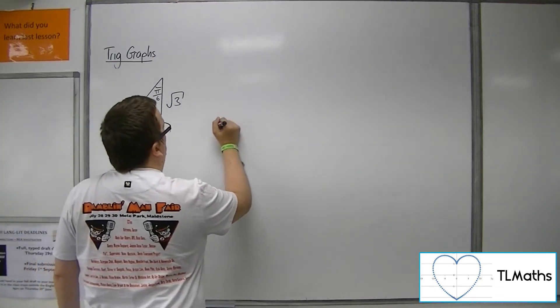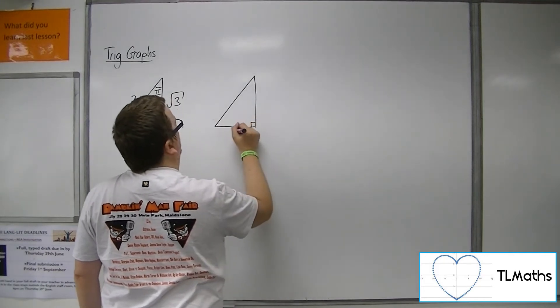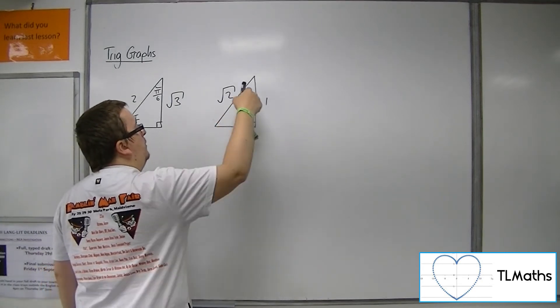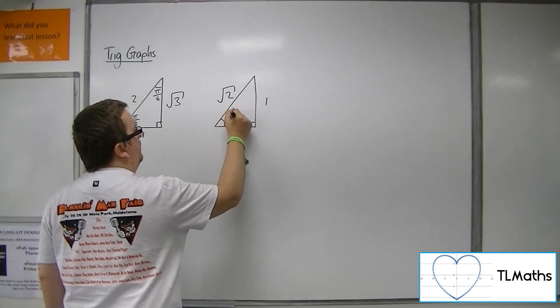The second one is your 1, 1, root 2 triangle, where both of those angles, because it's isosceles, must be 45 degrees, so that's pi over 4.